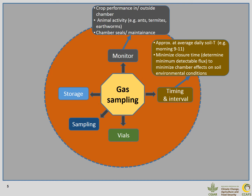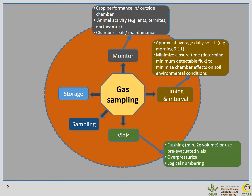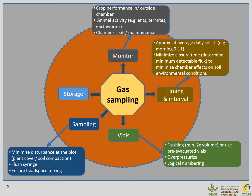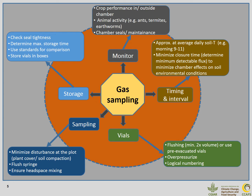Once we start to sample with our syringe, we should flush the valves where we store the gas samples to at least twice the valve volume, and we should overpressurize. While sampling, we should always take care not to disturb the plot too much and ensure good headspace mixing within the chamber. For storage, we should verify that our seals are gas-tight, use standards for comparison, and store vials in boxes.